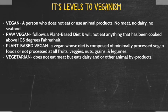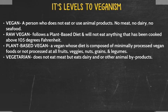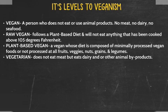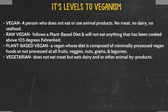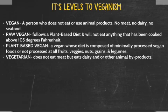Whenever someone is transitioning to veganism, I always suggest that they become a flexitarian first. A flexitarian is someone who flexes between different diet types, which means they may eat meat on certain days but choose to practice being a vegan on other days until they fully make the transition into being the vegan type of their choice.